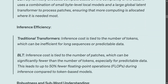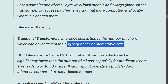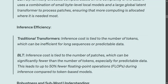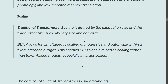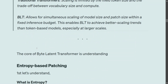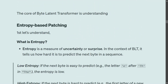For inference efficiency: in traditional transformers, inference cost is tied to the number of tokens, which can be inefficient for long sequences or predictable data. In BLT, inference cost is tied to the number of patches, which can be significantly fewer than the number of tokens — especially for predictable data — leading to up to 50% fewer floating point operations. BLT also offers better robustness, subword understanding, and scalability.